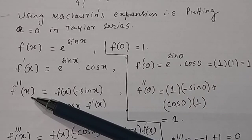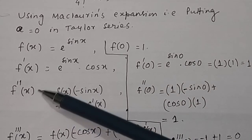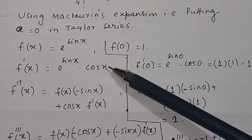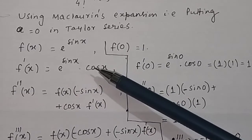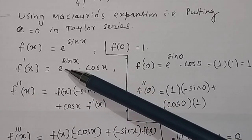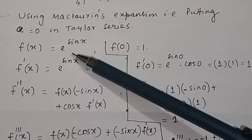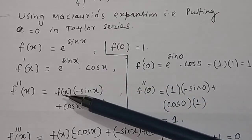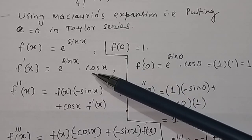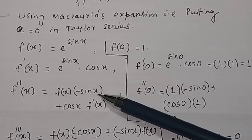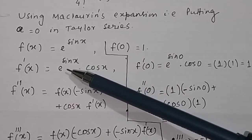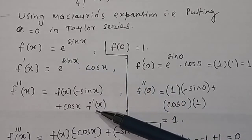Then we find out the second derivative of the function. Since f'(x) equals e to the power sin x times cos x, this is a product function. Using the product rule: first function times derivative of the second plus second function times derivative of the first. The first function is e to the power sin x, which is f(x), and the derivative of cos x is minus sin x, plus cos x times f'(x).